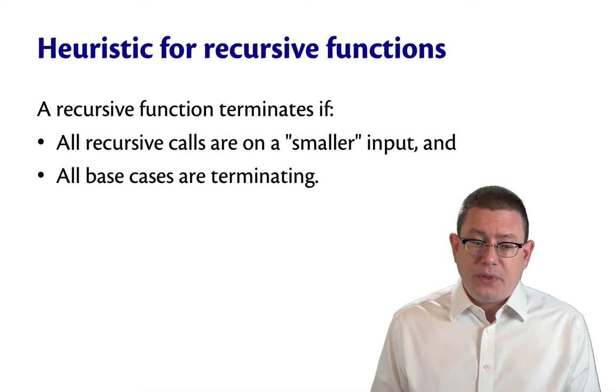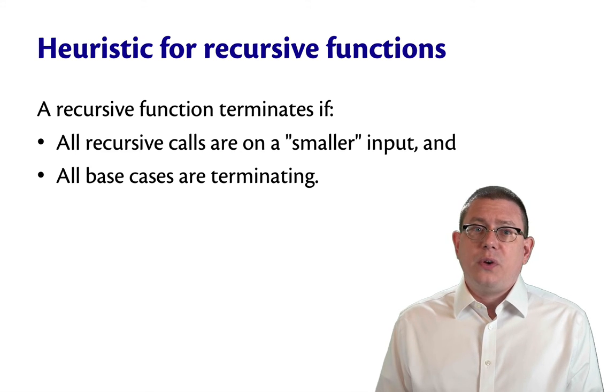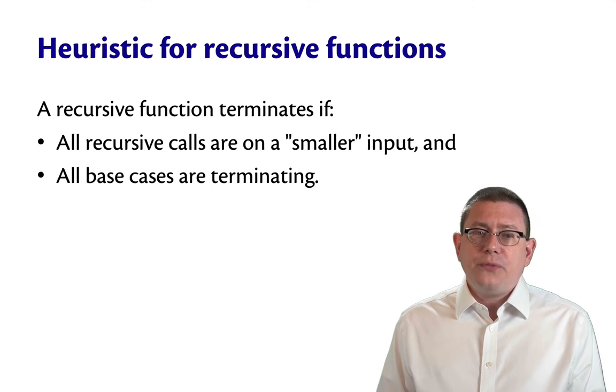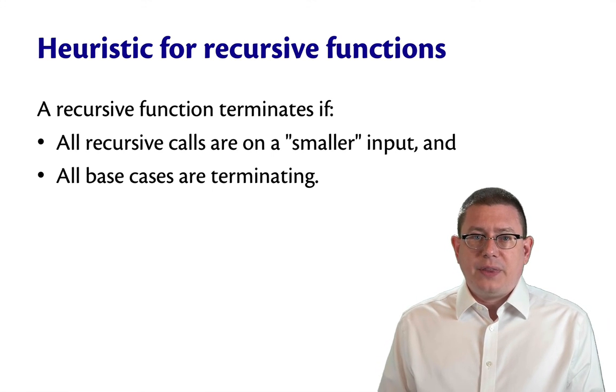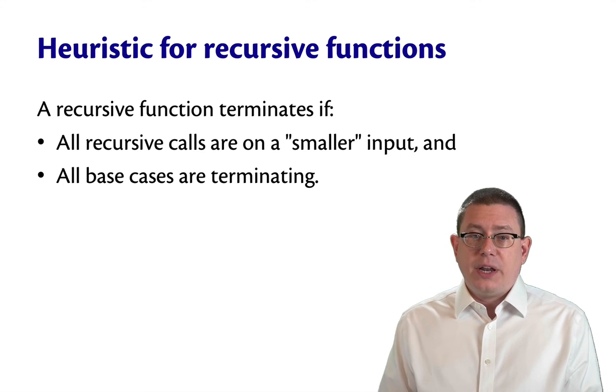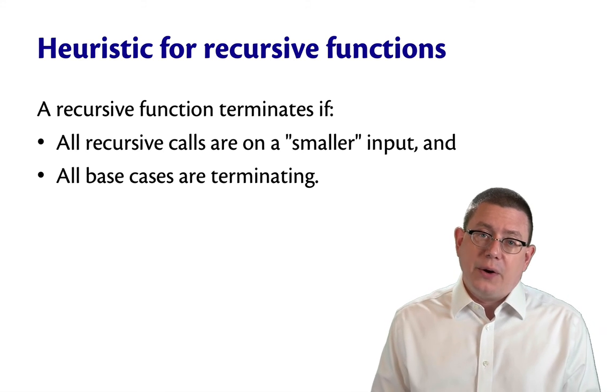There are some heuristics that can help, though. Let me give you one that's useful in the kind of proofs that we have been doing here. A recursive function terminates if both of the following things are true: all recursive calls that it makes are on a smaller input and all of the base cases are guaranteed to terminate.